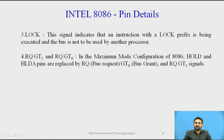Another important pin is RQ/GT, where RQ stands for request and GT stands for grant. There are two pins: RQ0/GT0 and RQ1/GT1. In the maximum mode configuration, the HOLD and HLDA pins are replaced by these request and grant signals. Another master can request the system bus using the bus request signal, and the processor communicates that the request is granted. RQ0/GT0 has higher priority than RQ1/GT1.